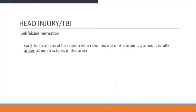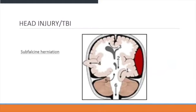Sub-falcine herniation is an early form of lateral herniation when the midline of the brain is pushed laterally under other structures of the brain. As shown here, it comes from the lateral side and starts to push the tissue around into the underlying structures.